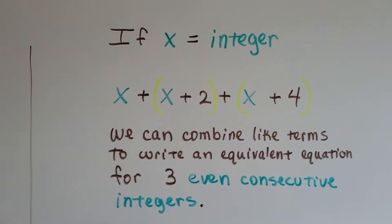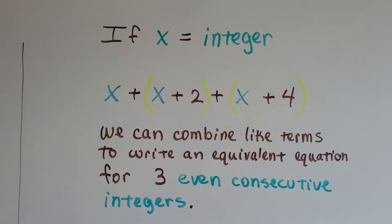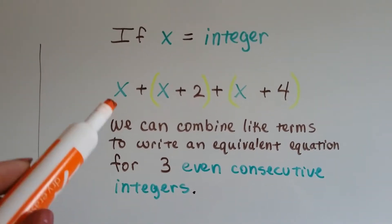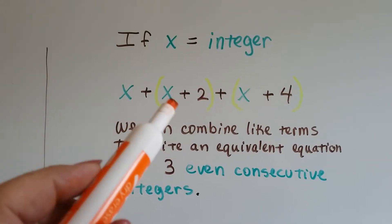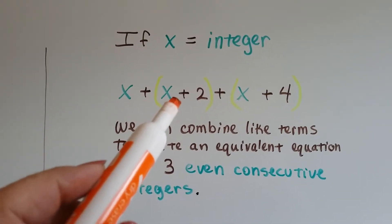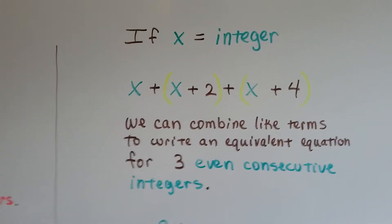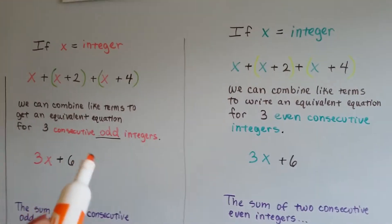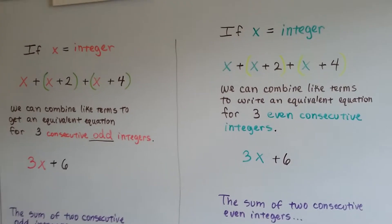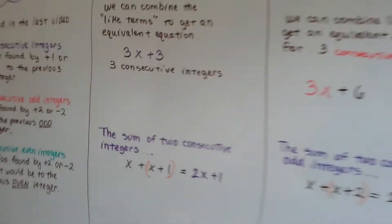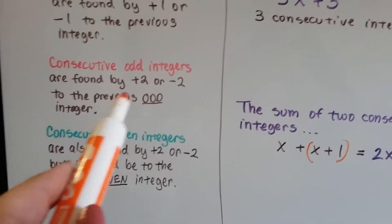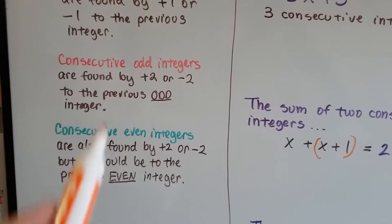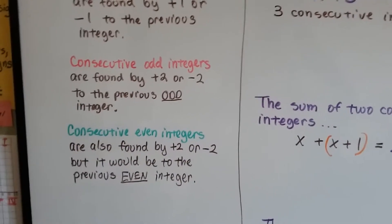If x equals an integer and we want to find three consecutive even integers, we would do x plus x plus 2 plus x plus 4, because just like the odd ones, they go up by 2. The consecutive even and odd integers go up or down by 2.